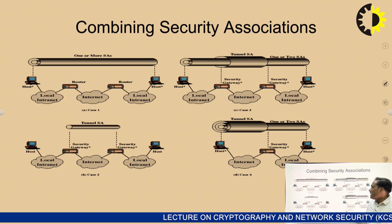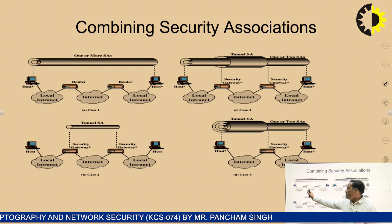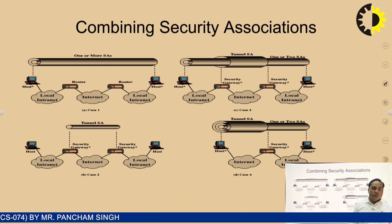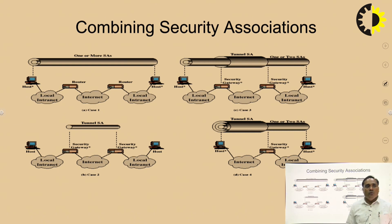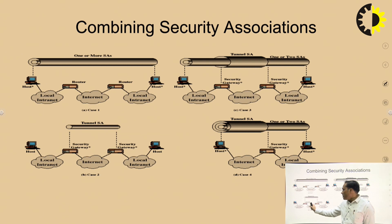Combining security associations: a host wanting to communicate to another host can do so via a router. The router is a medium for sending information from the local intranet to the internet and back to another local intranet. In case 2, two security gateways are used between a tunnel SA, where the internet works between the two security gateways, and a host communicates to another host by establishing communication through those two security gateways.